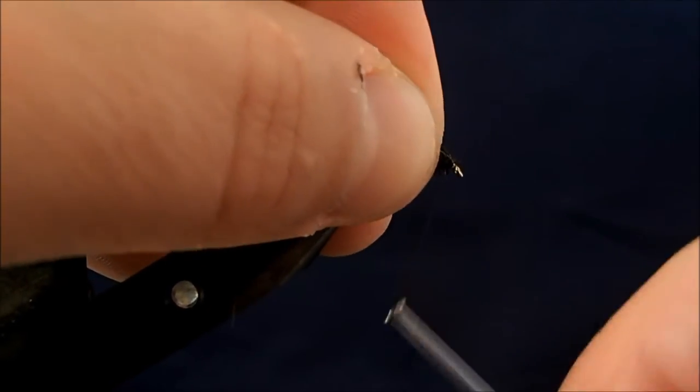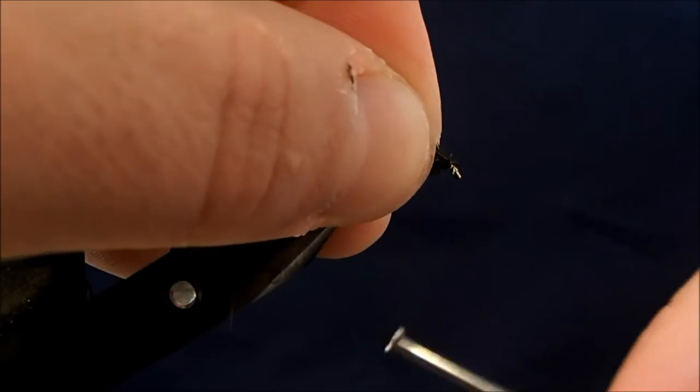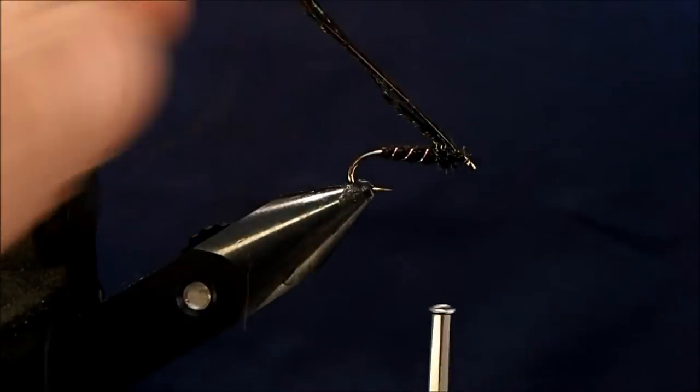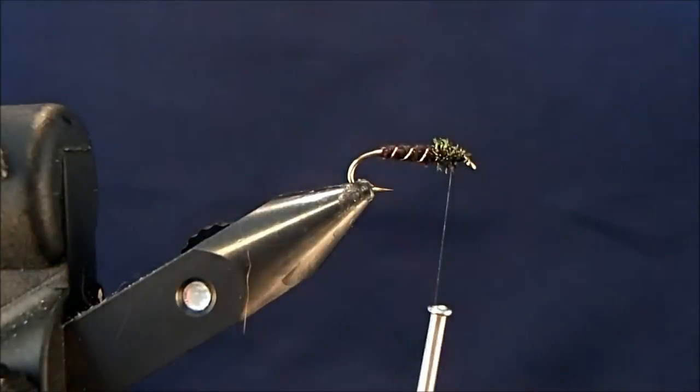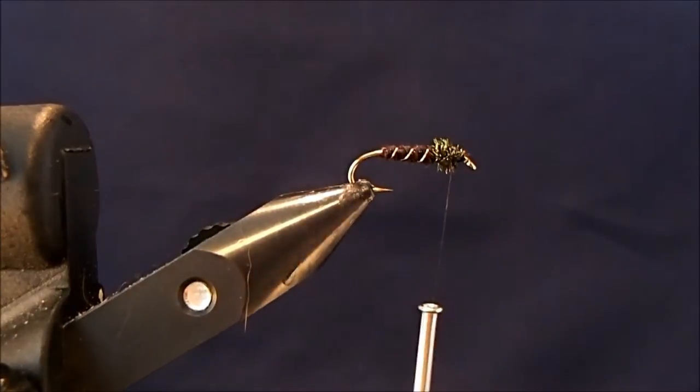Tie the stems back. All the wraps then are away from the eye, so I don't crowd it. And then clip that off. Now for the soft hackle, I'm going to use this soft hackle hen that I like for my wet flies.